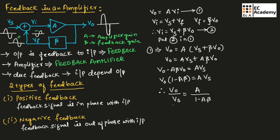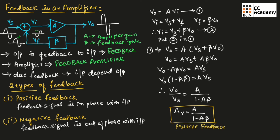Since V_out divided by Vs is the voltage gain, we can write: Av = A / (1 − A·β). This is the expression for voltage gain for a positive feedback amplifier. For negative feedback, the voltage gain is: Av = A / (1 + A·β). This is the expression for voltage gain for negative feedback.